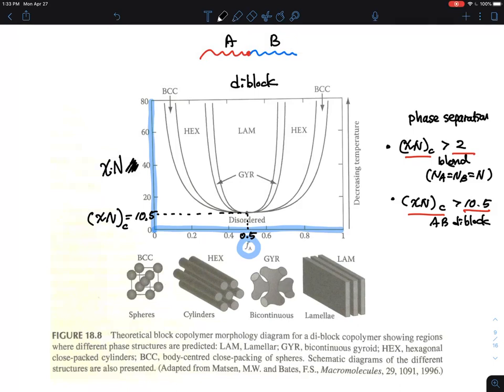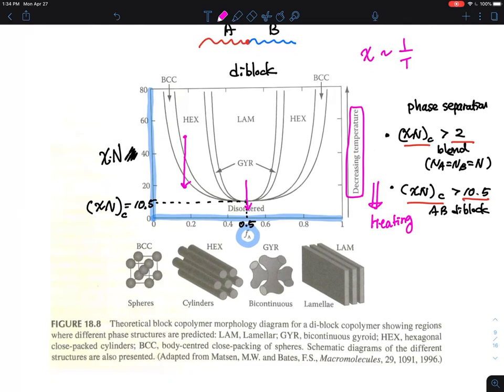In this notation, this is decreasing temperature. Chi is inversely proportional to temperature, so this is essentially heating. When you heat it up from here in the cylinder phase, you go through the BCC phase and eventually to the disorder state. With lamellar, you go through lamellar to the disorder state.